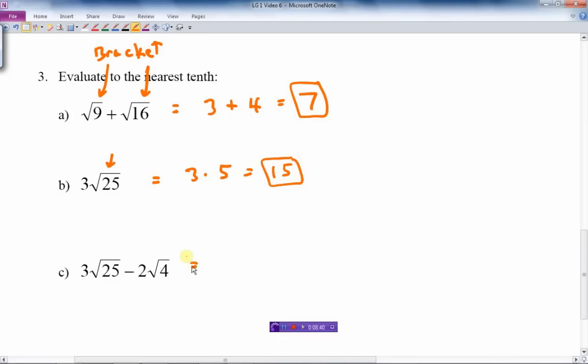Okay, the next one, we've got some multiplying, there's some minus, we've got some roots. Well, the roots come first. So let's do the roots first. I get 3 times, root 25 is 5, minus 2, root 4 is 2.